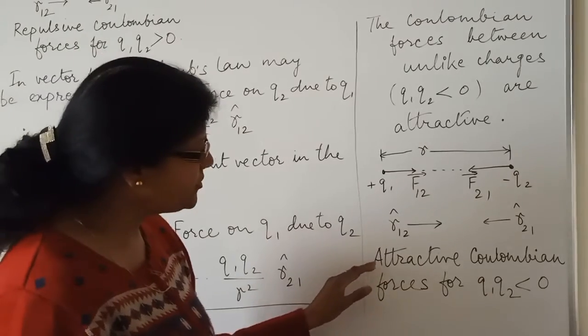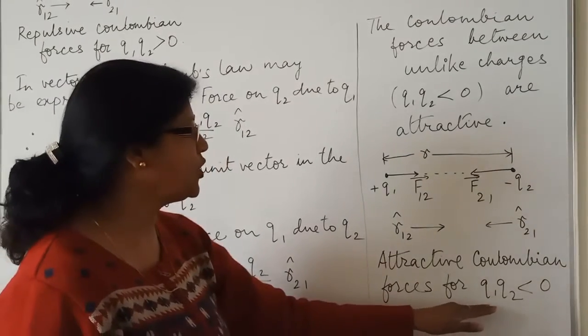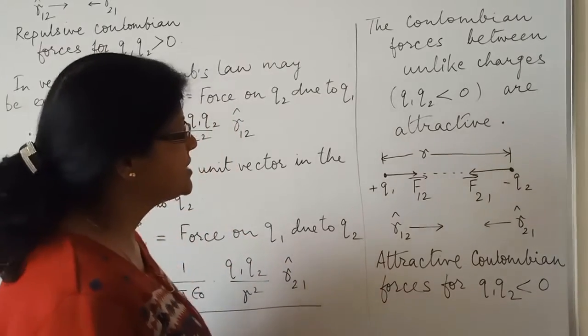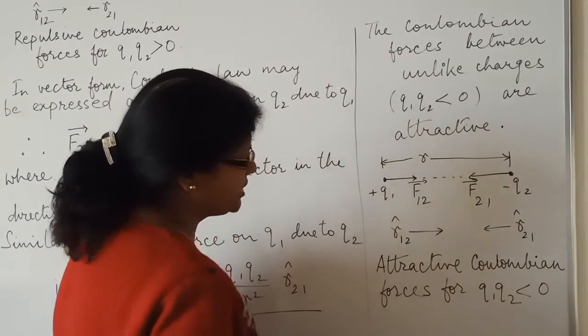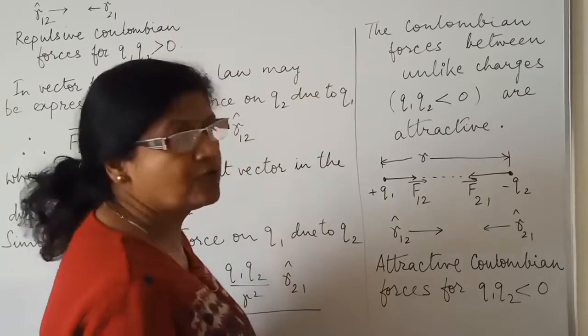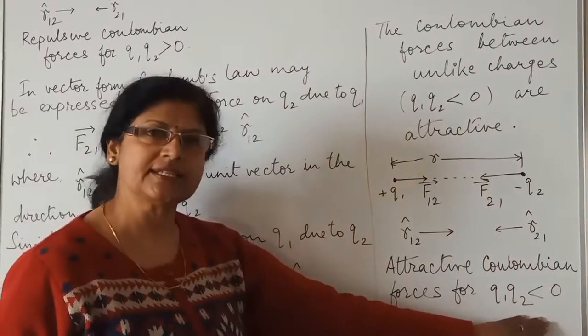So attractive Coulombian forces for Q1, Q2 less than zero. Here you see the diagram shows attractive Coulombian forces for Q1, Q2 less than zero.